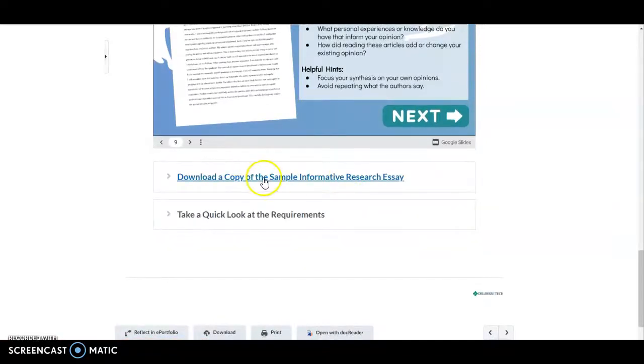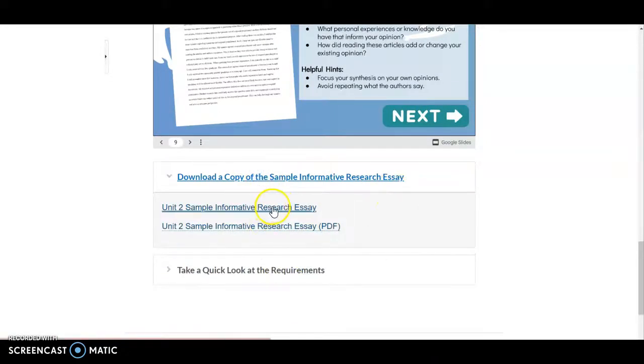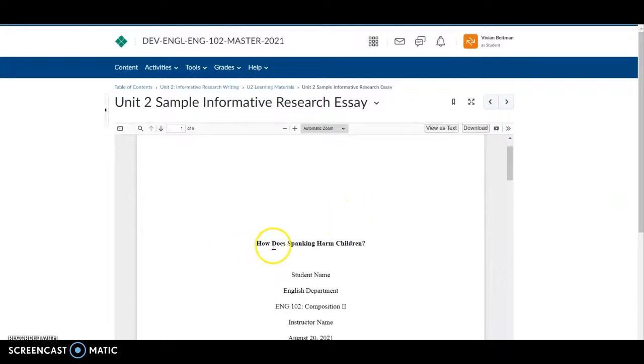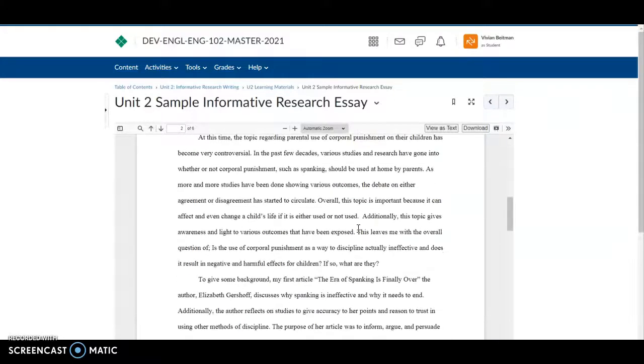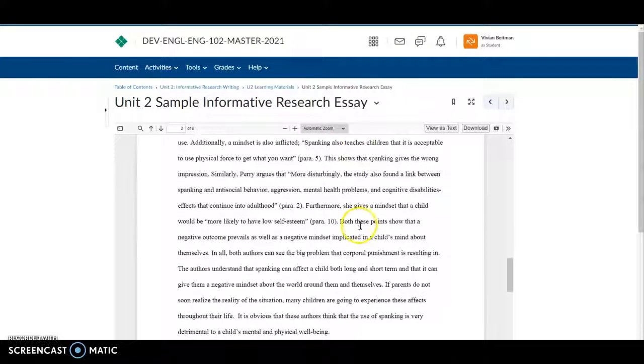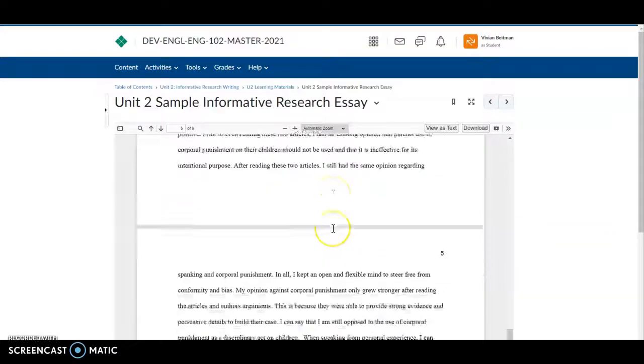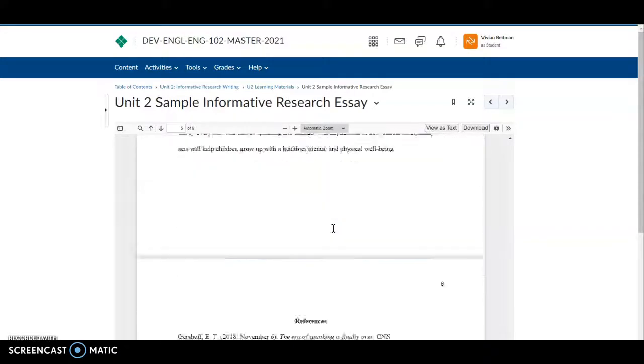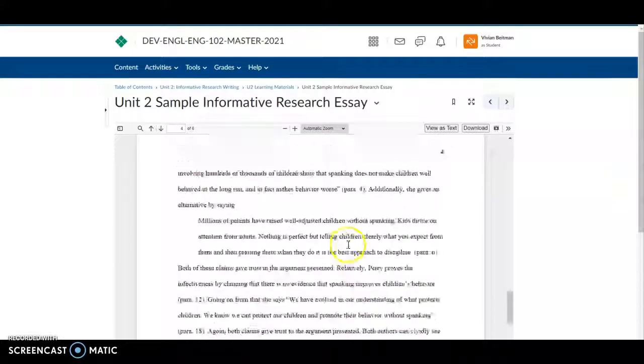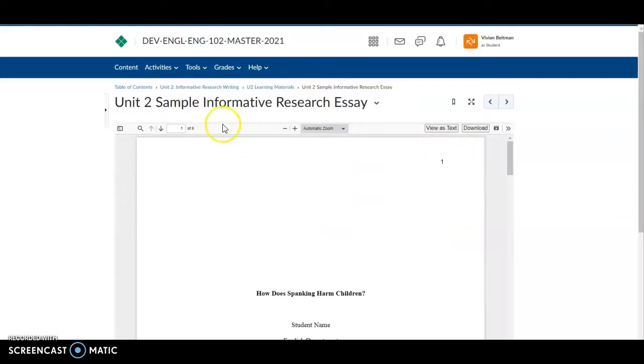You should also download a copy. You can download it in Microsoft Word or PDF form. This is a sample research essay written by another student. You can see how the essay is formatted. You will be reminded of what APA formatting looks like, and you can see what the reference page looks like. Of course, you will be doing another topic, but it's still helpful for you to look at how another student has approached this assignment.